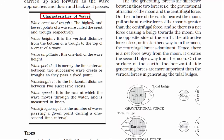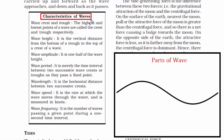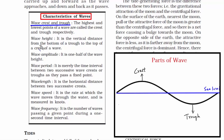Let's cover the characteristics of waves. I'll read the definitions while showing the illustration so you have a visual reference. Wave crest and trough: the highest and lowest points of a wave. If we draw a line representing sea level, the crest is above and the trough is below. Wave height: the vertical distance from the bottom of a trough to the top of a crest.